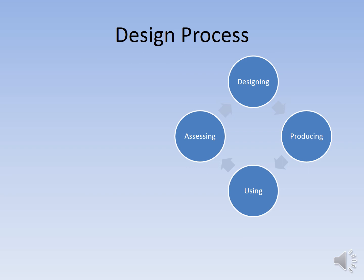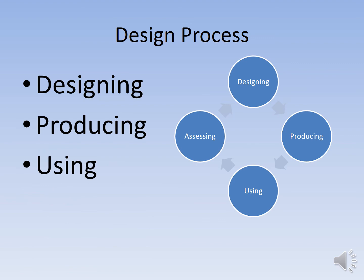Out of all of this, when we start looking at how humans have created things, we needed to break down this process to get a good understanding of what's actually happening. We found we could clarify this in the design process. There's also an engineering design process, which we'll get into later on. The design process is broken into four steps: designing, producing, using, and assessing.